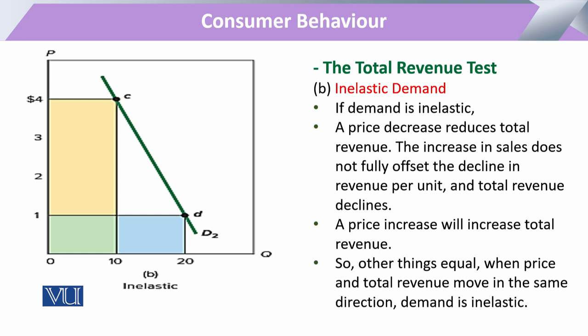When a commodity is inelastic or relatively inelastic — where responsiveness to price change is less than 1 — we have a steeper demand curve. A small decrease in price will enhance consumer demand, but not by a large quantity. The price decrease will be more, but the increase in quantity demanded will be less, and as a result total revenue will decline.